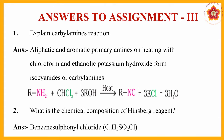What is the chemical composition of Hinsberg's reagent? It is benzene sulfonyl chloride, C6H5SO2Cl. This was utilized to differentiate between primary, secondary, and tertiary amines.